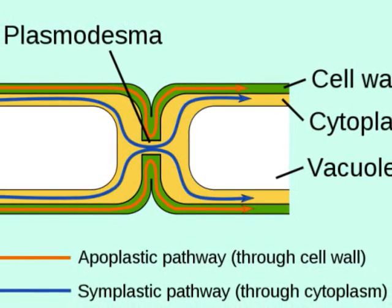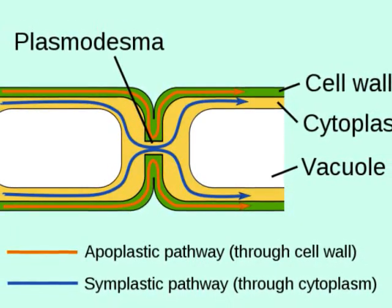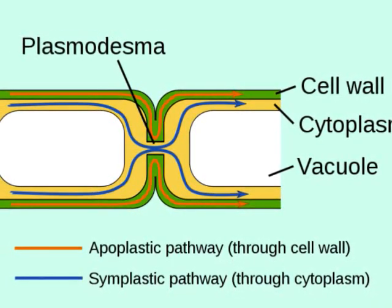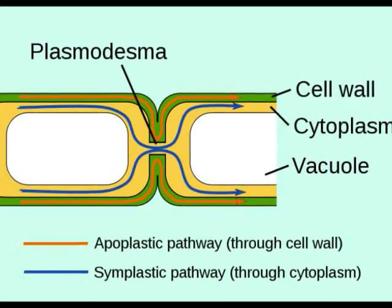Plasmodesmata are microscopic channels that traverse the cell walls of plants, connecting the cytoplasms of adjacent cells allowing molecules to travel between the cells through the symplastic pathway.